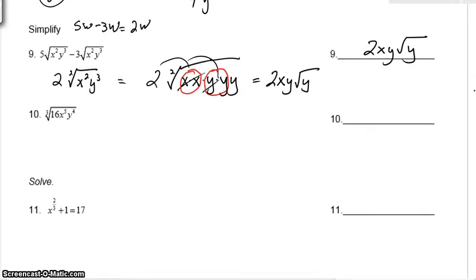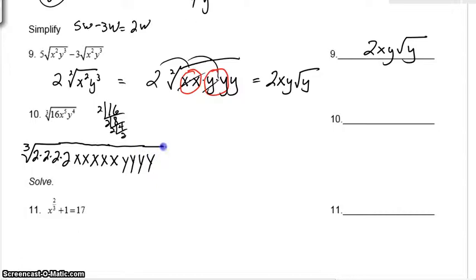Okay, for number 10, I'll tell you what. Let's start breaking 16 down with a little factor tree. We could say 2 goes into 16 8 times. 2 goes into 8 4 times. 2 goes into 4 twice. Looks like we have 4 2s. So I'll say 2 times 2 times 2 times 2. Looks like we also have 5 x's. So I'll count those out with the 5 x's. We'll also have 1, 2, 3, 4 y's.